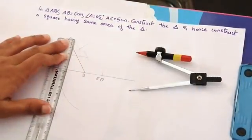A, B, C, D, E, F, G, H. Then I will write BFGH is the required square having area equal to triangle ABC.